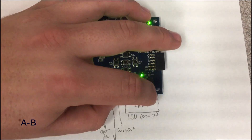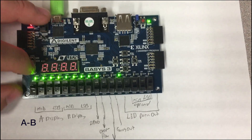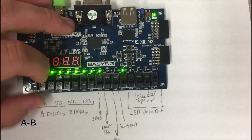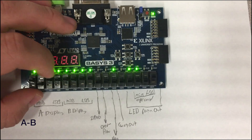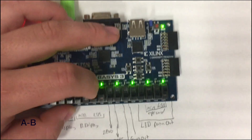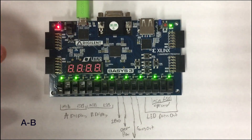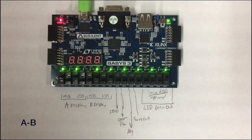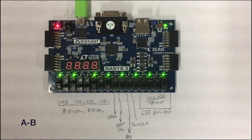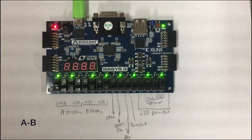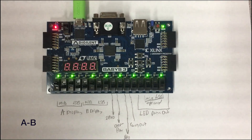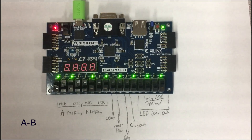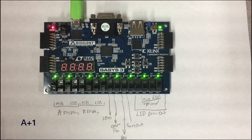Next we are going to do operand 0 0 1, which is a minus b. With a minus b we are going to do 1 1 0 1 0 and 0 1 0 1, and what will happen is negative 6 minus 5 which gives us negative 11, shown as 1 0 1 0 1 on the LEDs above the operand.